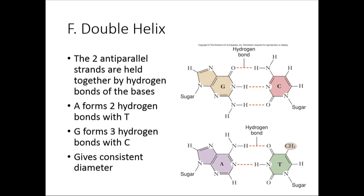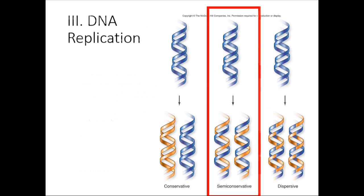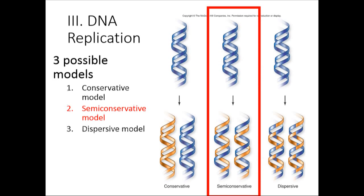The double helix is held together by hydrogen bonds between the bases. Adenine forms two hydrogen bonds with thymine, and guanine forms three hydrogen bonds with cytosine. This gives DNA a consistent diameter at any point along the molecule.